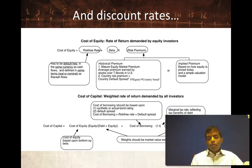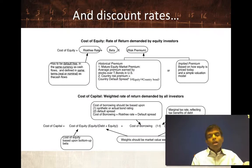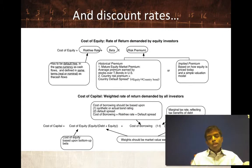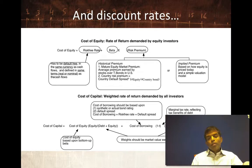To get the cost of debt for the cost of capital, start with the same risk-free rate and add a default spread that reflects the credit risk of your company — obtained from an actual credit rating or a synthetic rating. Net out the tax advantage to debt to get an after-tax cost of borrowing. Then weight the cost of equity and after-tax cost of debt by market value weights to arrive at the cost of capital.